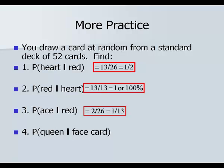Number four: the probability of being a queen given that it was a face card. You do the probability of both a queen and a face card — there are 4 queens that are face cards — out of the probability of being just a face card. There are 12 face cards in the deck: all the jacks, queens, and kings. So 4 out of 12, which equals 1 out of 3.